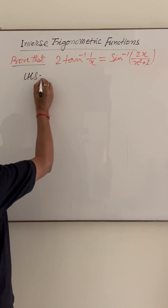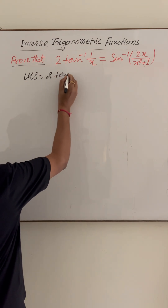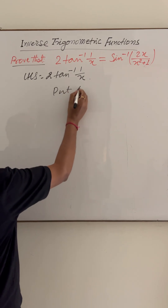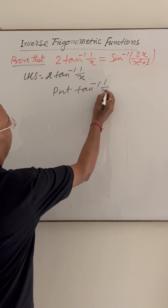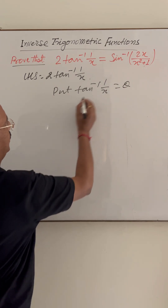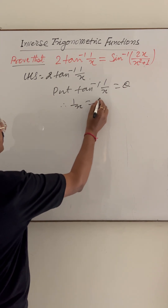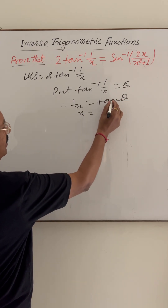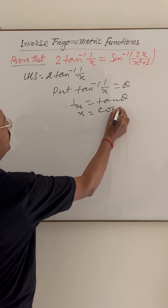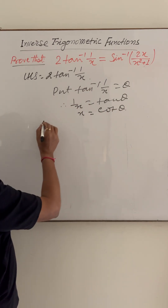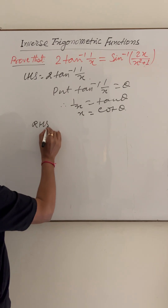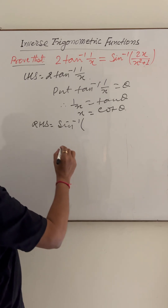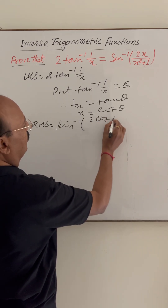Here LHS is 2 tan inverse of 1 by x. We will put tan inverse of 1 by x equal to theta. So therefore 1 by x is equal to tan of theta, and x is equal to 1 by tan theta, which means x is cot theta. So now the right hand side can be written as sin inverse of 2 cot theta upon x square plus 1.